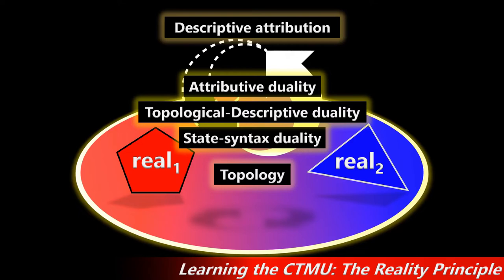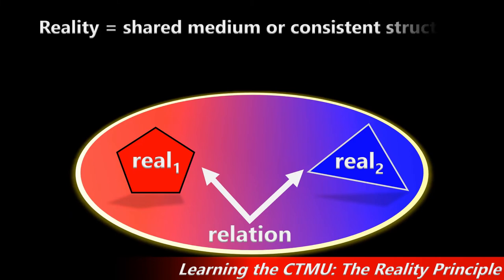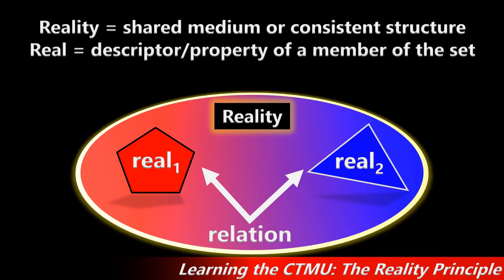You should be able to see why, when you describe an object as real, it has to be situated inside a medium or domain containing other real objects. And you should also be able to see why an object you're calling real has to be related to the contents of reality by a real relation — the two things go together. Asserting one side automatically entails the other. Anything that does not obey either of these rules is preemptively excluded from being real or true. So to make things as clear as possible, we call reality the shared medium or consistent structure within which real objects exist. 'Real' is a descriptive attribute of those objects by virtue of being members of the domain reality.